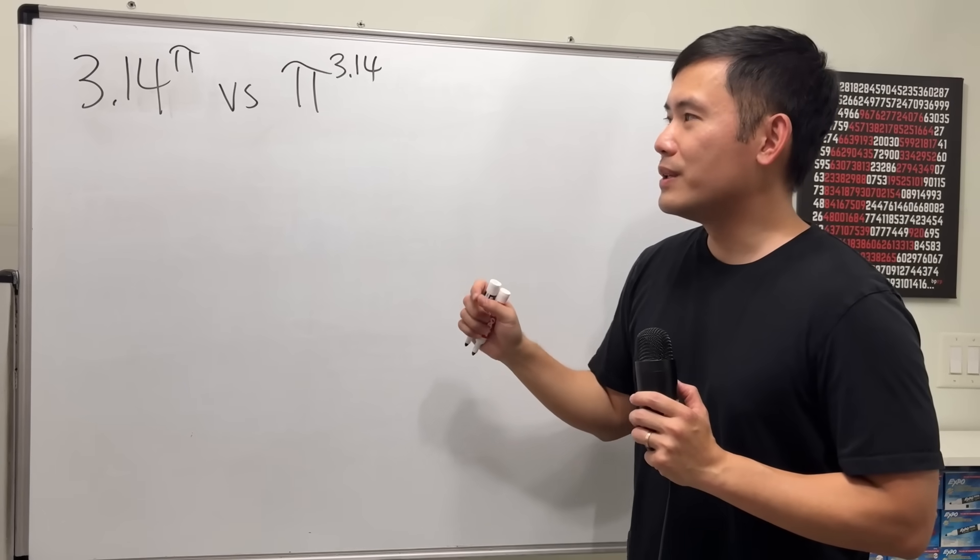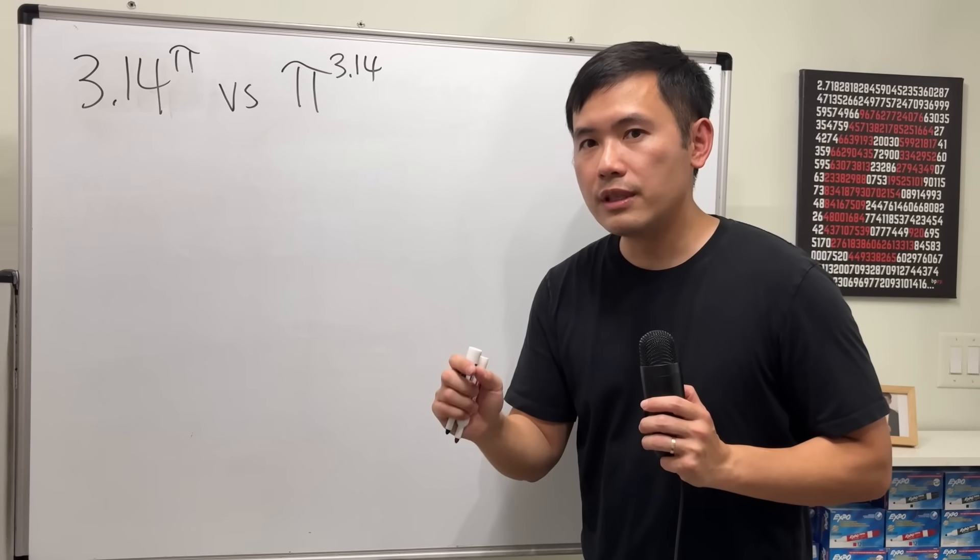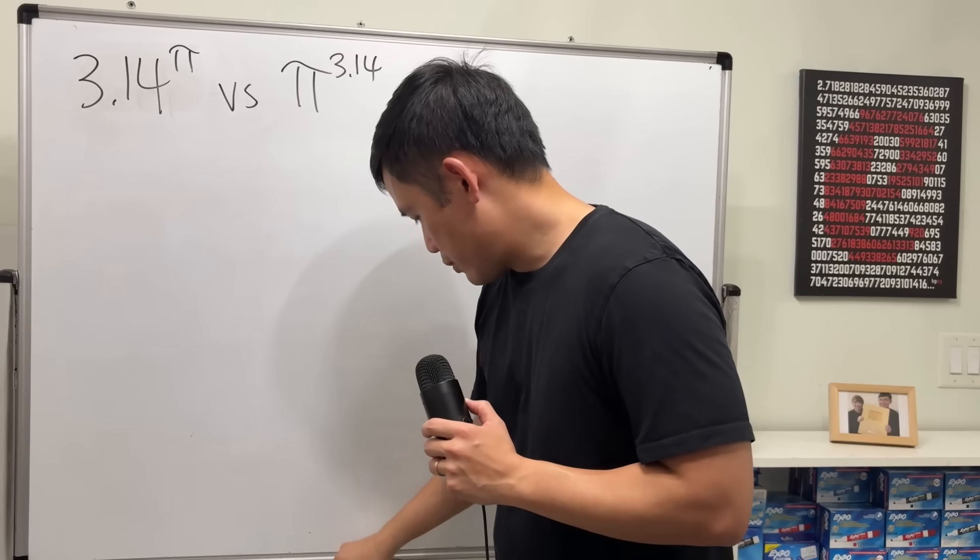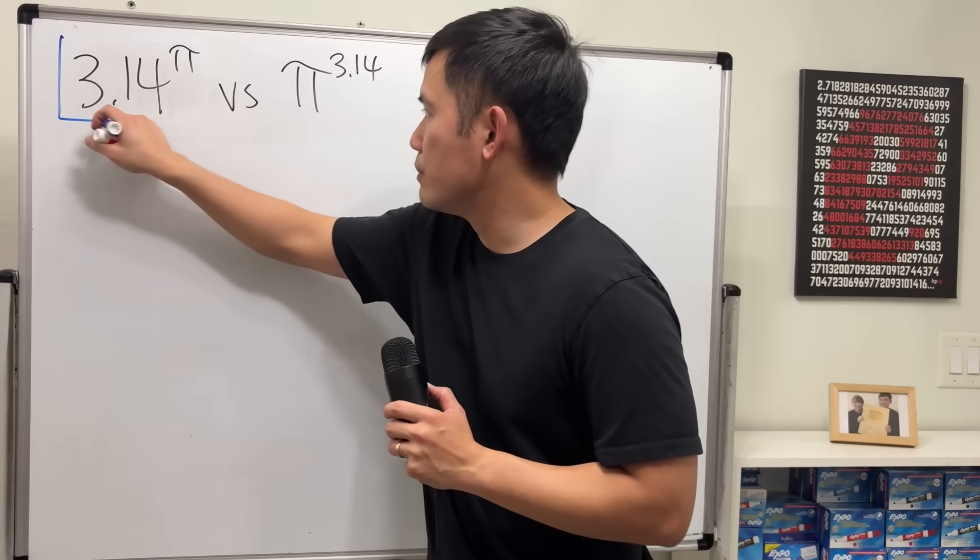Then in this case, just go with the base that's closer to e, which is 3.14. Therefore, this right here is the answer, and then we are done.